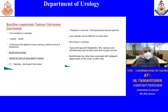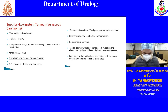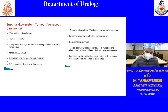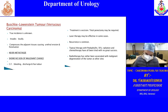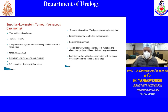The Buschke-Löwenstein tumour, or verrucous carcinoma, will invade locally but will never metastasize. It shows no signs of malignant change but will destroy adjacent tissue. Treatment is total penectomy, though laser can be used in some cases. There is also some treatment with 5-fluorouracil, podophylline, and radiation.